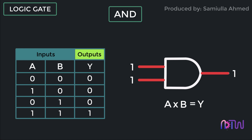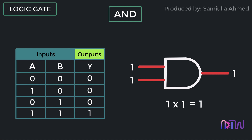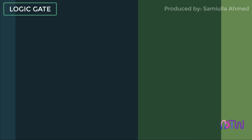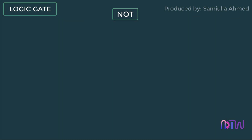For the last set of inputs, A equals one and B equals one, we will have output Y equals one since both A and B have input one. We can verify it by the equation A times B equals Y: one times one equals one. This is the logic behind the working of the AND gate.